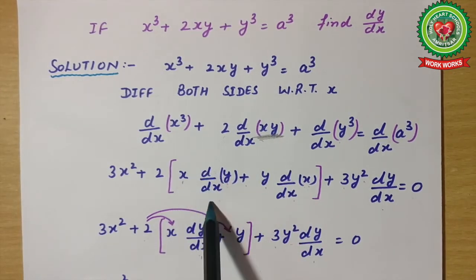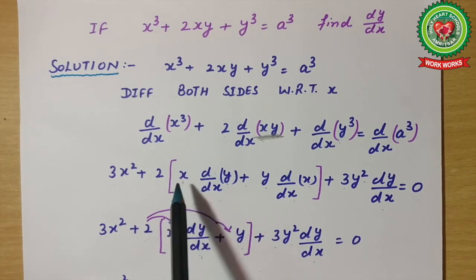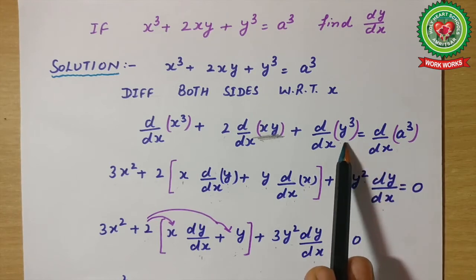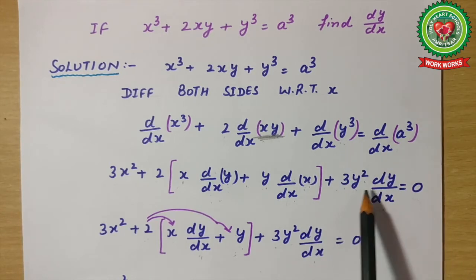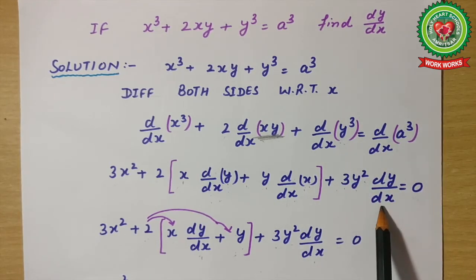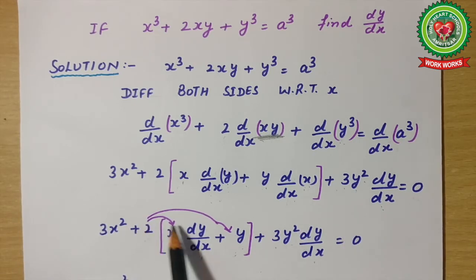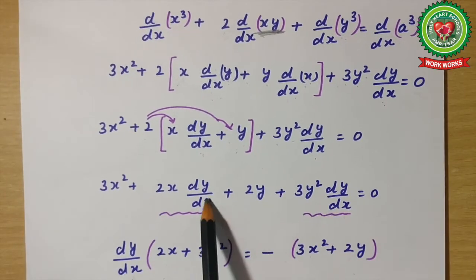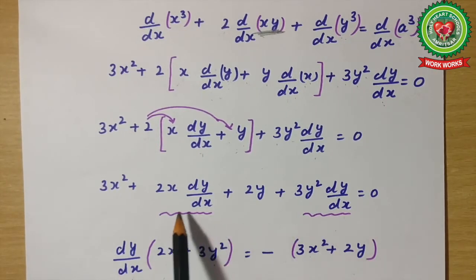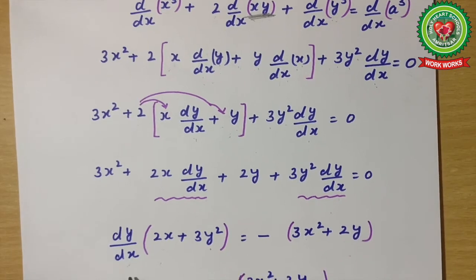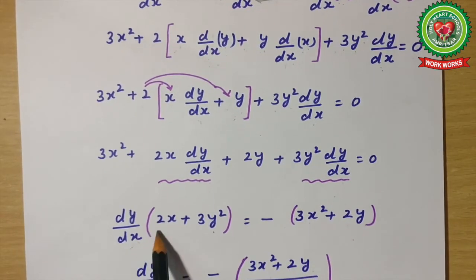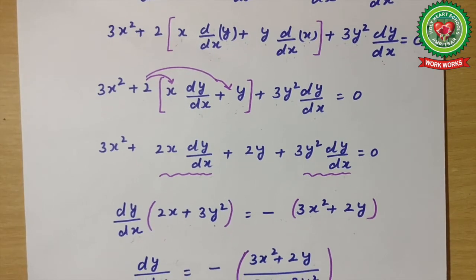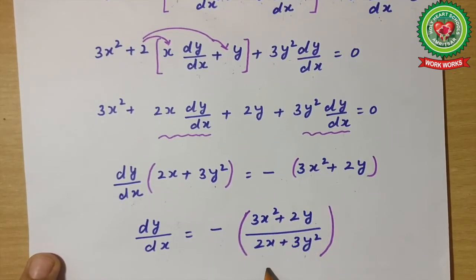Differentiation of y³ is 3y² · dy/dx. Applying the product rule and separating the dy/dx terms: 3x² + 2(x · dy/dx + y) + 3y² · dy/dx = 0. Collecting dy/dx terms on the left-hand side: dy/dx(2x + 3y²) = -3x² - 2y. Therefore dy/dx = (-3x² - 2y) / (2x + 3y²).